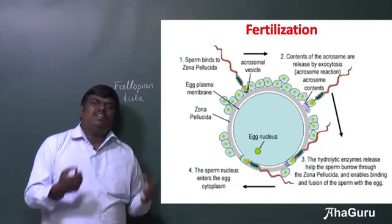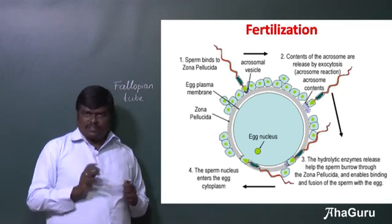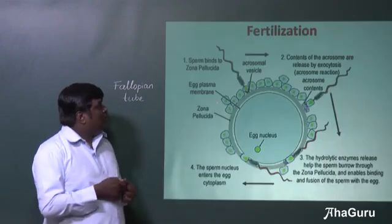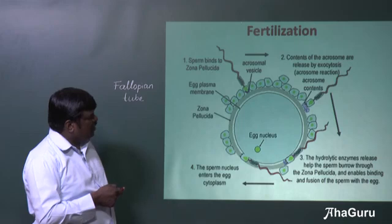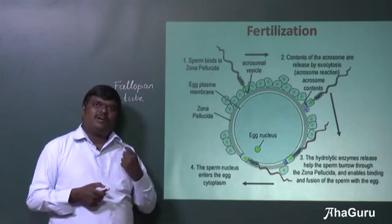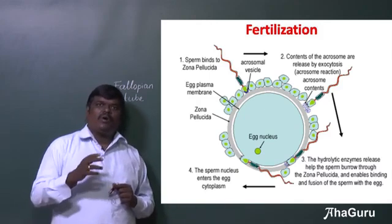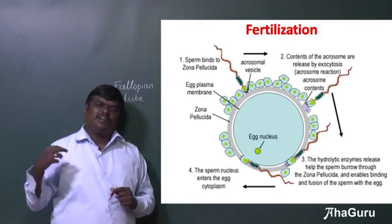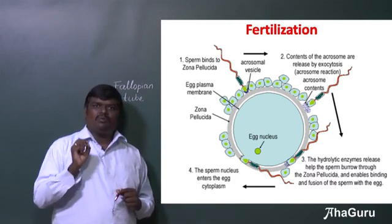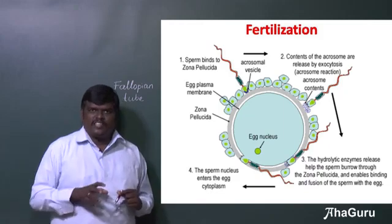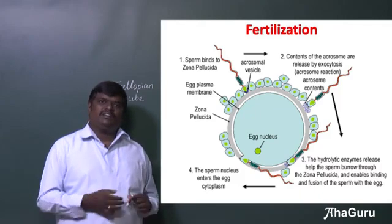Even though millions and millions of sperms approach the ovum, only one sperm can fertilize it. Once one sperm has fertilized the ovum, a lot of changes take place in the egg membrane — the outer membrane becomes stiffened and hard, so that further sperms will not enter inside. This is to avoid the polyspermy condition — poly means many — to avoid entry of many sperms into the ovum.